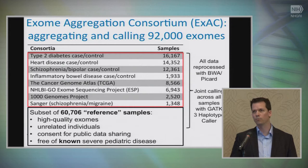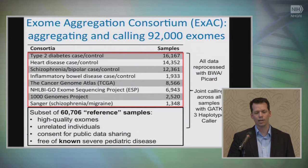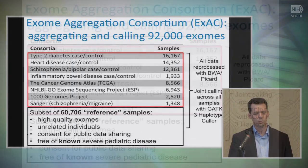We then proceeded to remove about a third of those samples and release a publicly accessible call set of just over 60,000 samples that is clean — restricted only to high-quality samples, to individuals who are unrelated to one another, to those who have consent for public data sharing, and to individuals who, as far as we can tell, do not have severe pediatric disease and are not first-degree relatives of those with severe pediatric disease. This reference dataset — although we can't, for consent reasons, share the individual-level genotypes — is a dataset where we can share frequency data for all of the variants that we discover.